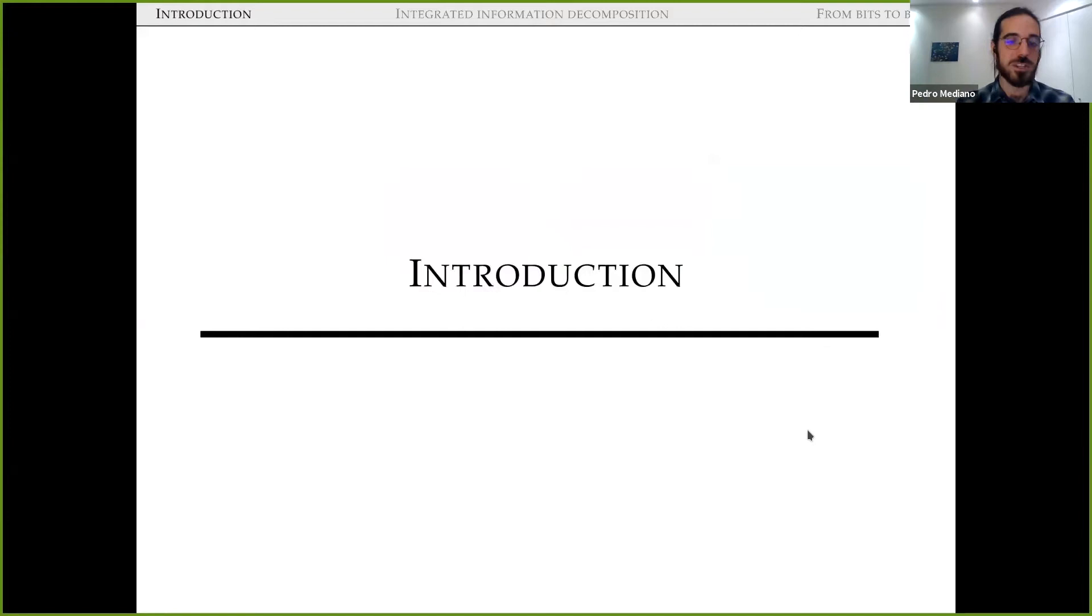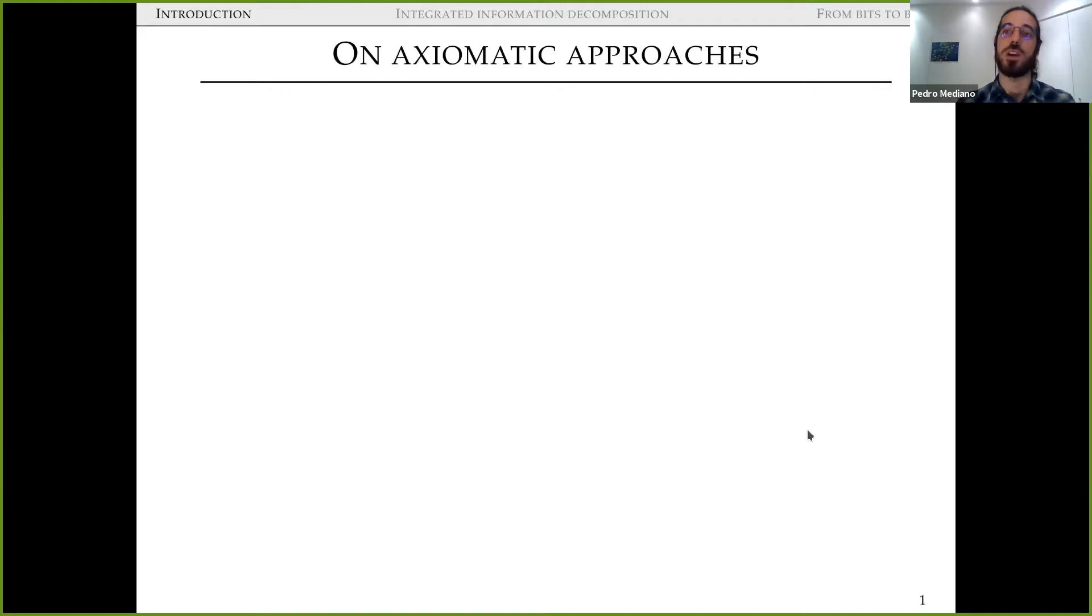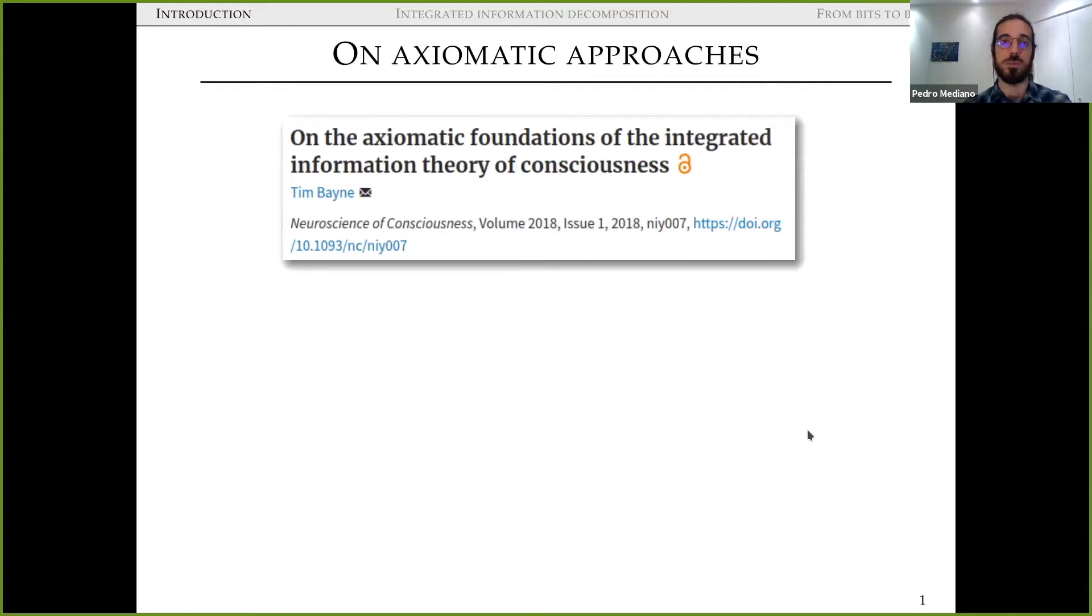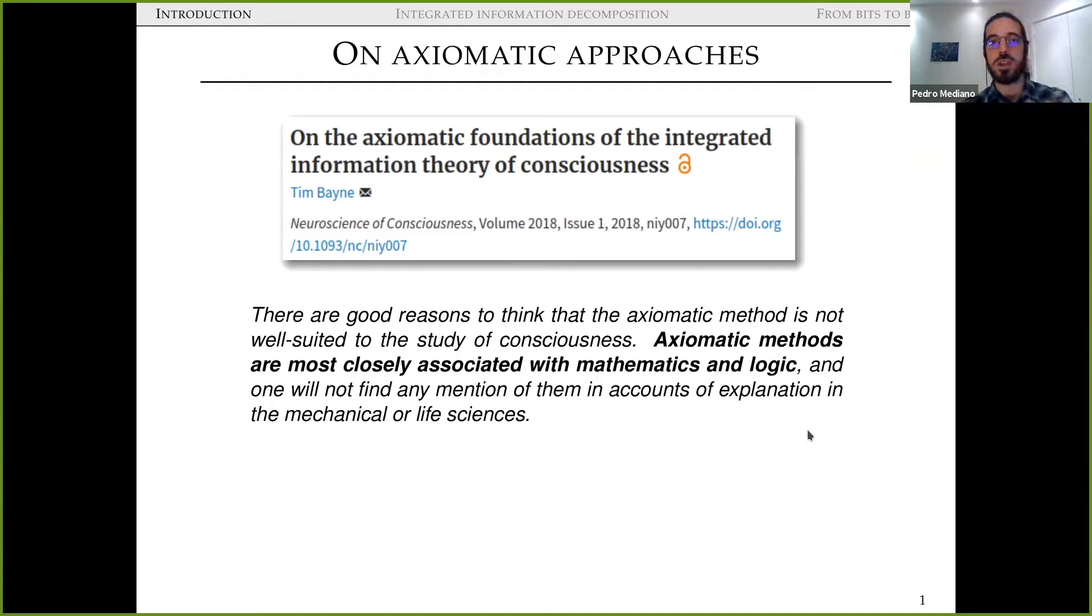Cool, let's jump right in and talk about IIT and mathematical approaches to consciousness. I'd like to begin with a bit of a detour, talking about axiomatic approaches to various scientific fields, in particular consciousness. And talking about axiomatics and consciousness, one paper that I'd like to highlight, which I think is really fantastic, is this paper by Tim Bayne on the axiomatic foundations of IIT, on the integrated information theory of consciousness. And this is a fantastic paper that you should all go and read, but in particular, I'd like to highlight one paragraph near the end of the conclusion of this paper that says this: There are good reasons to think that the axiomatic method is not well suited to the study of consciousness. Axiomatic methods are most closely associated with mathematics and logic, and one will not find any mention of them in accounts of explanation in the mechanical or life sciences.